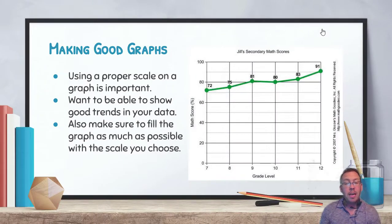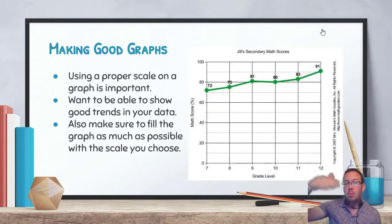Again, we just talked about this. Proper scale is important. We want to show good trends in your data. So this graph right here, you know, the scale is not that great. We're looking at Jill's secondary math scores and how they've increased over time, but notice all of the blank space at the bottom of the graph. The best way to scale this would probably be from 60 to 100 and then going up either by multiples of five or multiples of maybe two going up the scale. This way we can do better comparisons of data, so try to fill up that graph as much as possible and make sure you show good trends in your data.